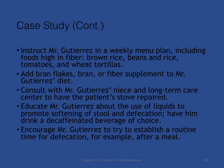Case Study continued: Instruct Mr. Gutierrez in a weekly menu plan including foods high in fiber — brown rice, beans, tomatoes, and wheat tortillas. Add bran flakes or a fiber supplement to his diet. Consult with Mr. Gutierrez's niece and the long-term care center to have the patient's stove repaired. Educate Mr. Gutierrez about the use of liquids to promote softening of stool and defecation, and have him drink a decaffeinated beverage of choice. Encourage him to try to establish a routine time for defecation, for example, after a meal.